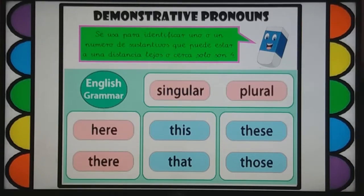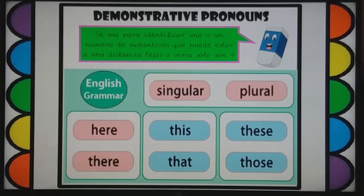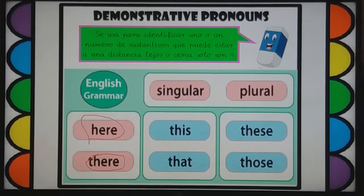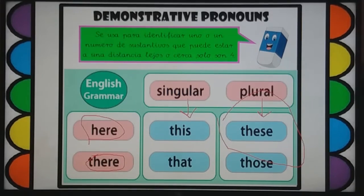So in Spanish, se usa para identificar uno o un número de sustantivos que puede estar a una distancia, tanto sea lejos o cerca. Son cuatro estas palabritas de los pronombres demostrativos. Tenemos 'here' and 'there', que también es una palabra a la cual vamos a referirnos si está lejos o está cerca — esto o eso, refiriéndose a una distancia si es corta o larga. Singular: voy a usar this or that. En plural: these or those.